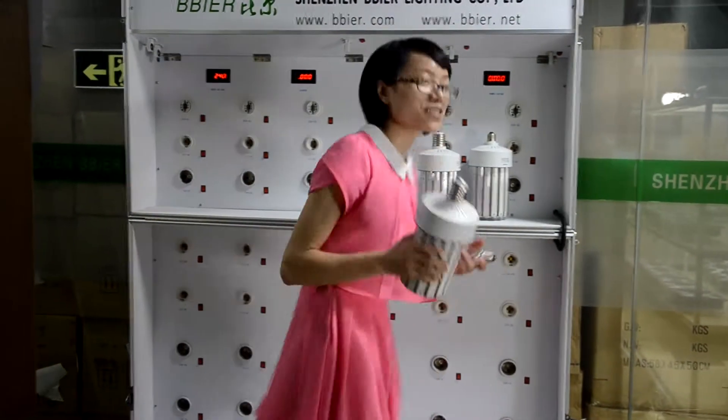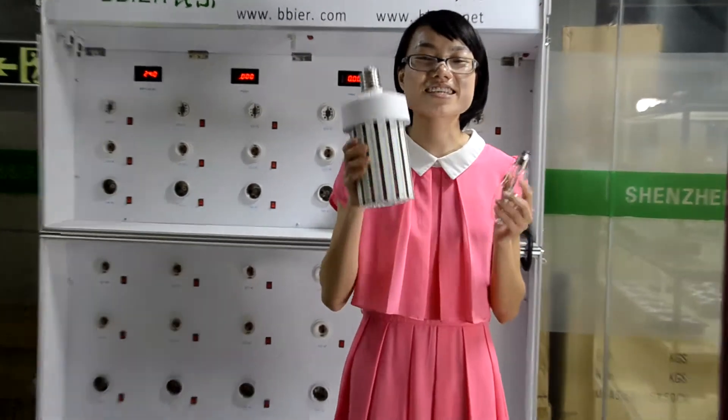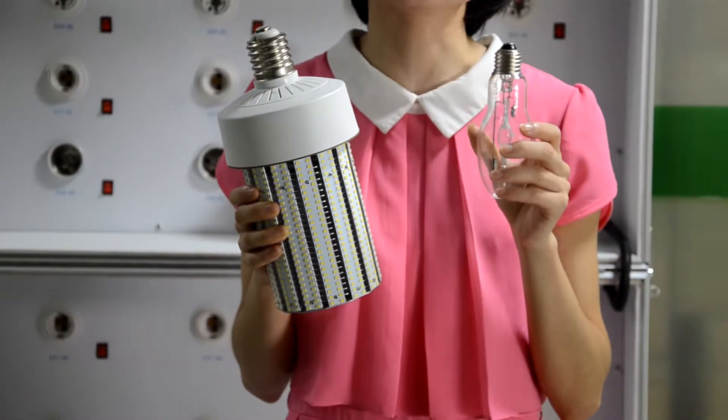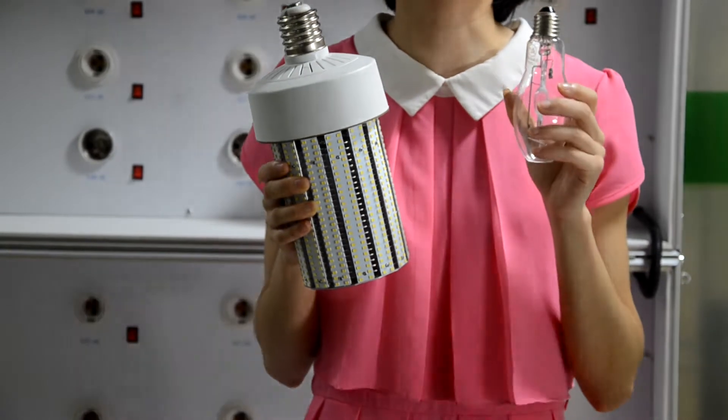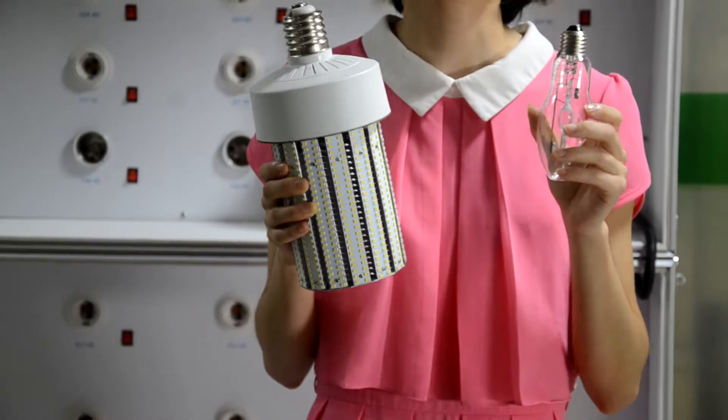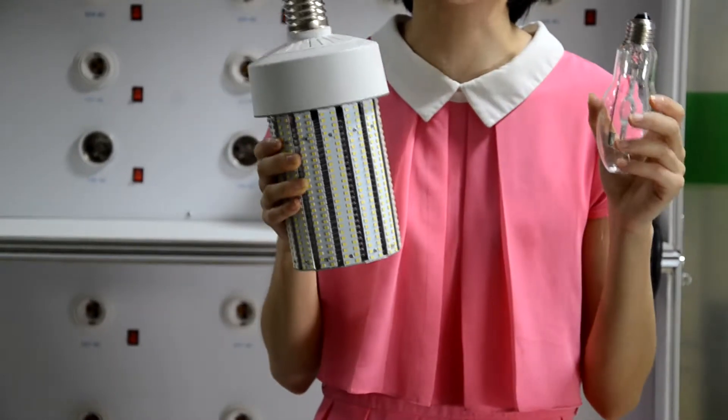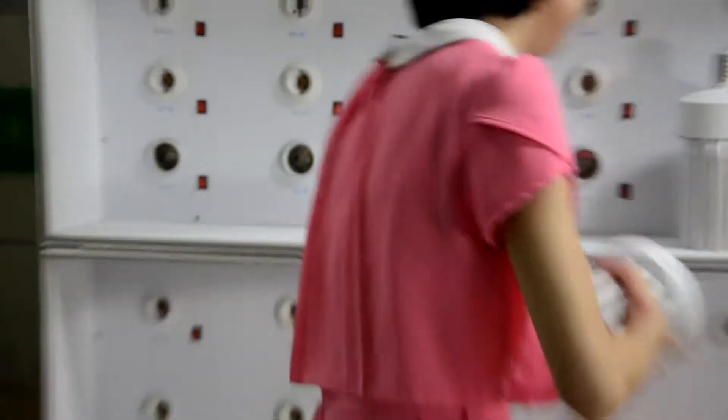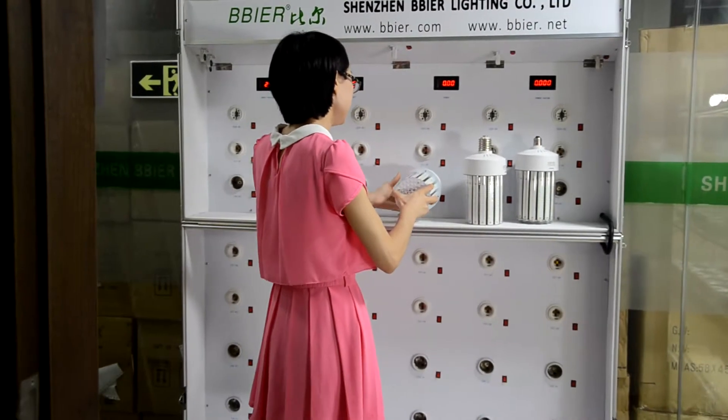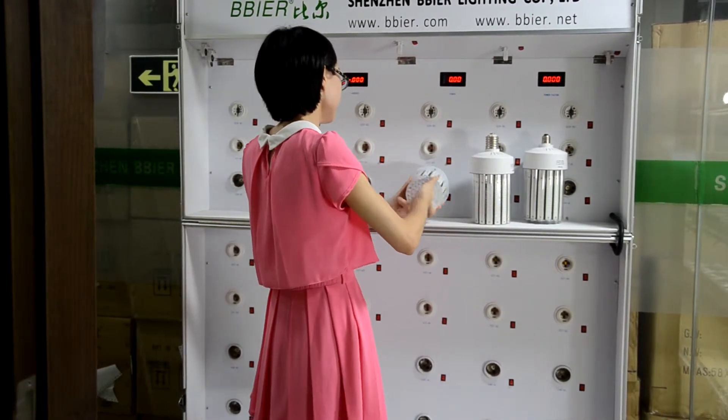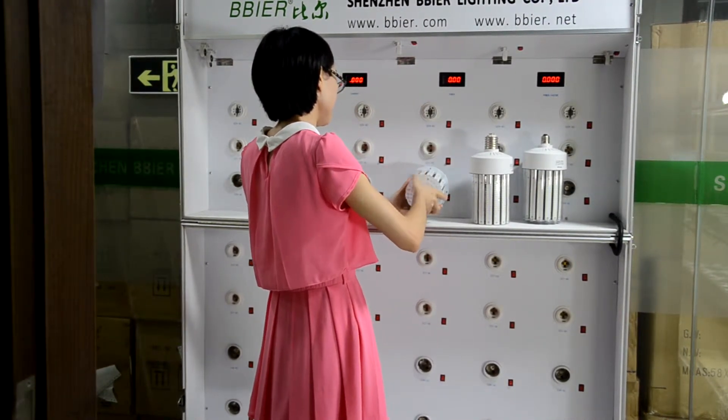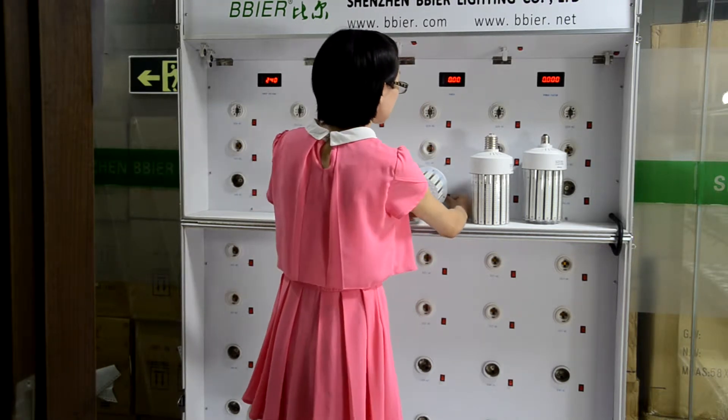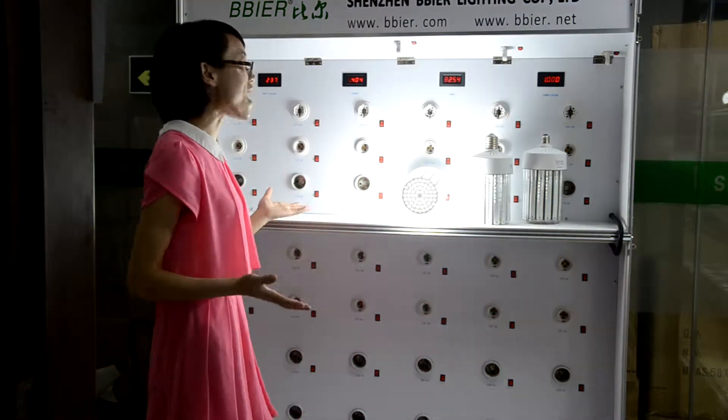Next, I would like to show you the two bulbs. This is LED corn bulb, it's 90 wattage. And this is the metal halide bulb, 250 wattage. They can replace each other. Okay, let me show you the LED corn bulb. Just screw it on and turn on the switch. Wow, so bright.